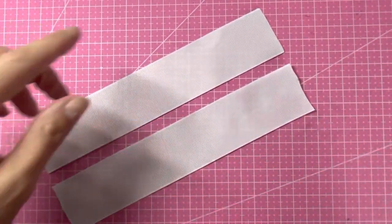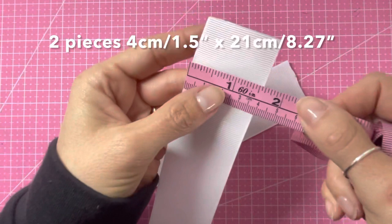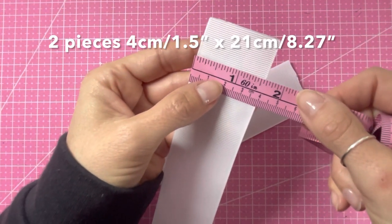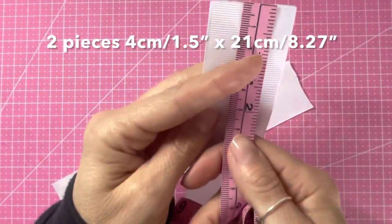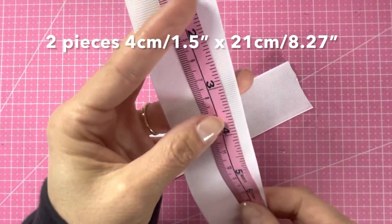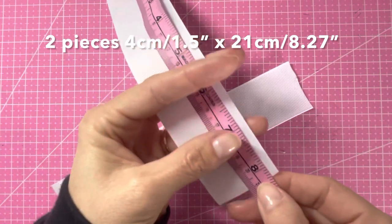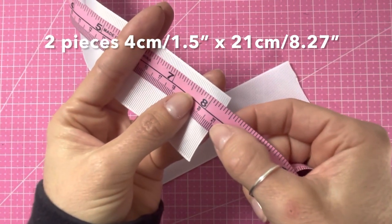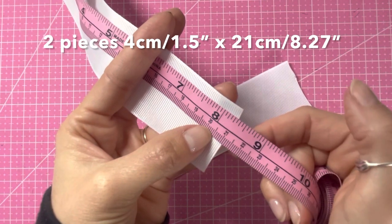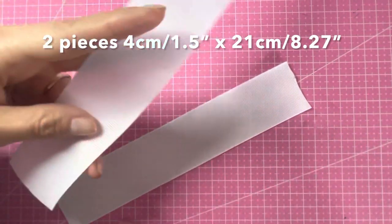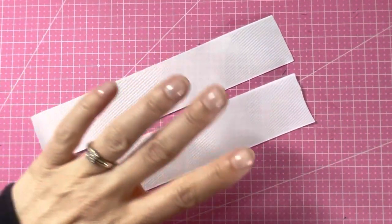You will need two pieces. These are four centimeter wide pieces of ribbon or one and a half inch wide, and these two pieces are cut to 21 centimeters in length or just over eight and a quarter inches in length. That is two pieces.